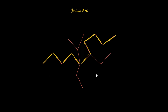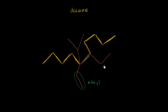Now let's think about the groups that are attached to this decane. We have this group right over here — it has two carbons in it, one carbon, two carbons. Because it has two carbons, we would use the prefix 'eth'. Remember, 'meth' is one carbon, 'eth' is two carbons. And since it's a group, not the backbone, this is an ethyl group. We have another ethyl group right over here as well — two carbons attached — this is also an ethyl group.